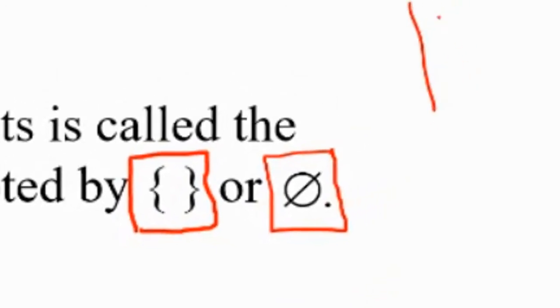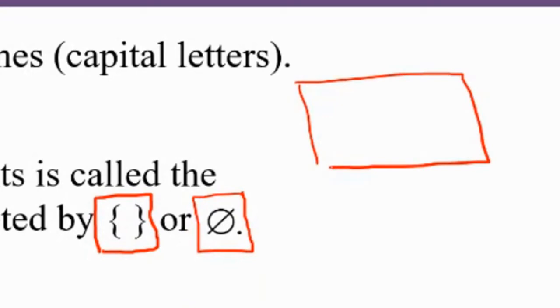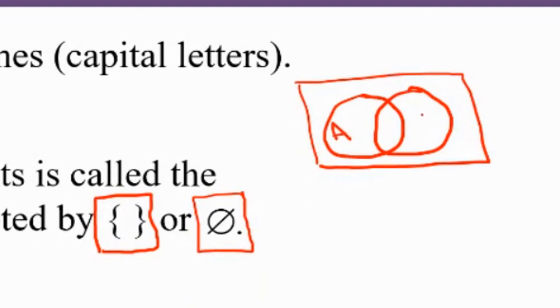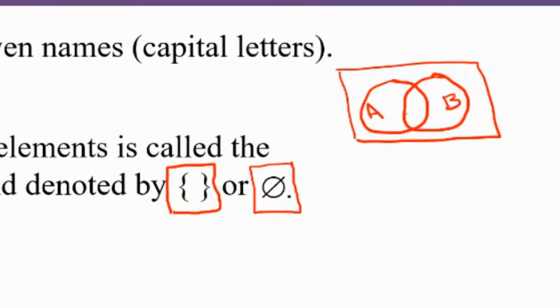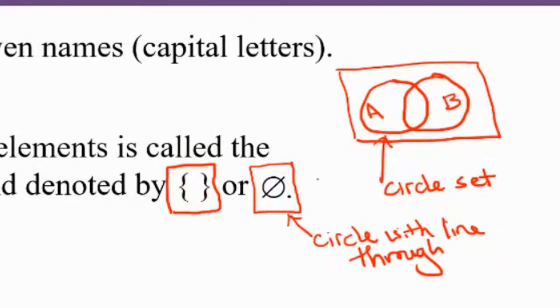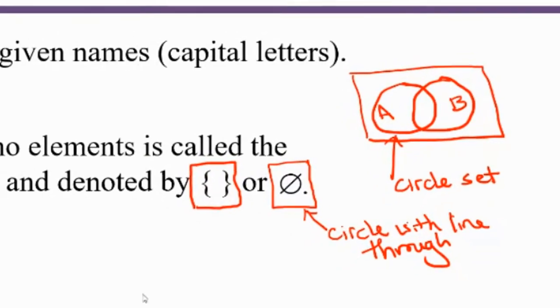But there's also another notation which is actually more common. Usually people use this circle with a line through it. Don't let that fool you. It is not a zero. The reason why we use this notation is that you've probably seen in the past and we'll see more in this chapter, often the relationships between sets are represented in something called a Venn diagram. And in a Venn diagram, a circle represents a set. So what this is actually is a circle with a line through it. So it's got the set but it's crossed out because there's nothing in the set.